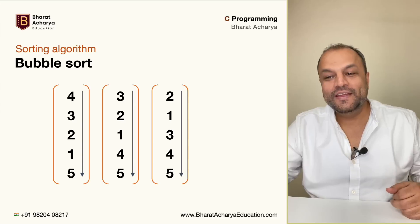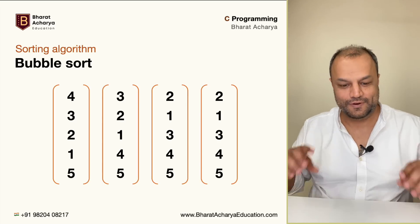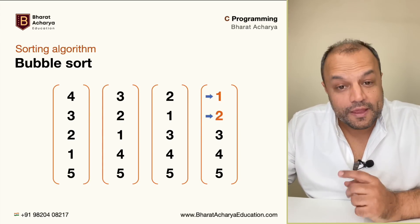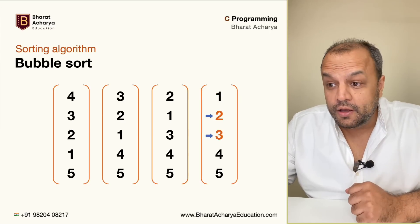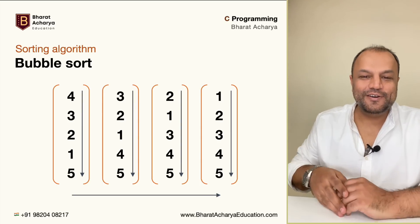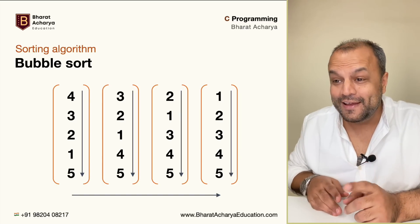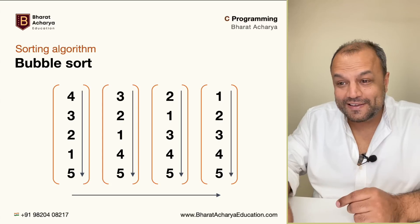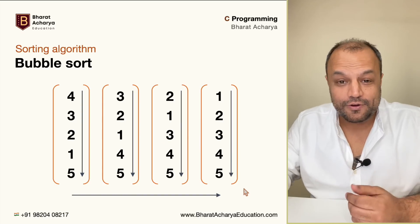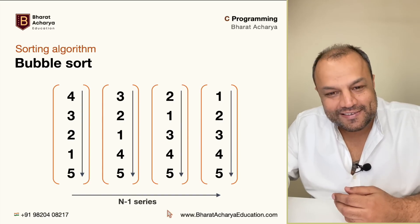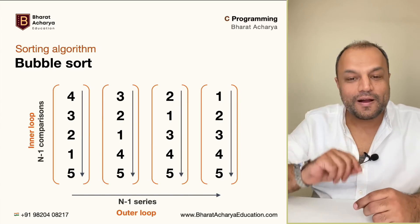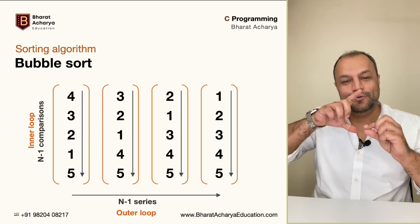Three and four are in correct order, four and five correct order - five is already in the right place. That's your third series. Do it all over again with the outer loop. Compare one and two - not in correct order, interchange to get one and two. Then two and three, already sorted, already sorted, already sorted - sorting is complete. With five numbers, you produced four series - n minus one series. The outer loop count is n minus one, and the inner loop count is also n minus one.